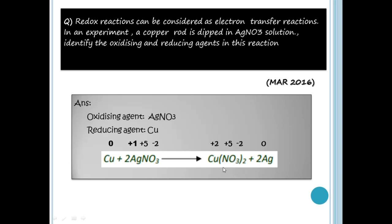Copper is in the +2 state in Cu(NO3)2. Ag goes from +1 in AgNO3 to 0 in the free state, so Ag is reduced. Nitrogen is +5 here and +5 there. Oxygen is -2 here and -2 there — unchanged.